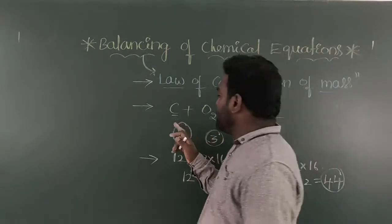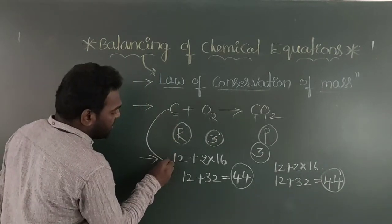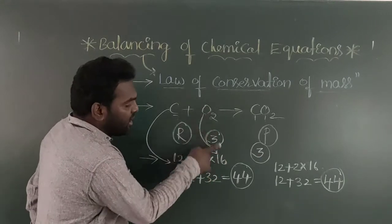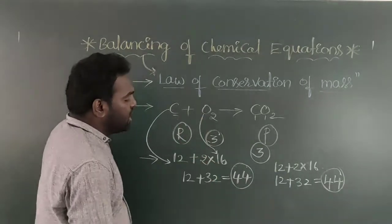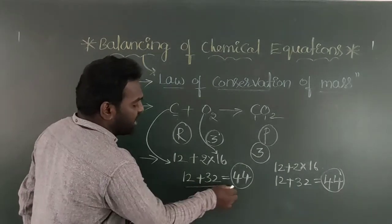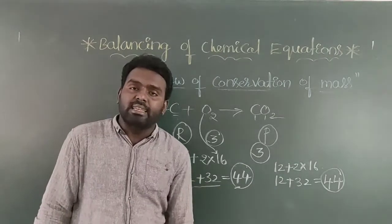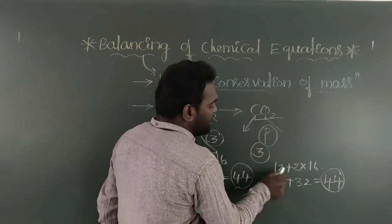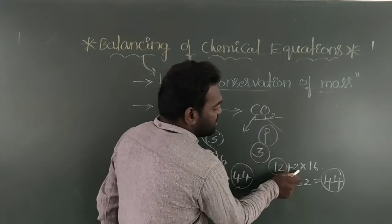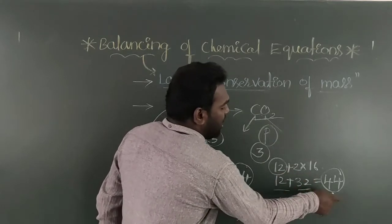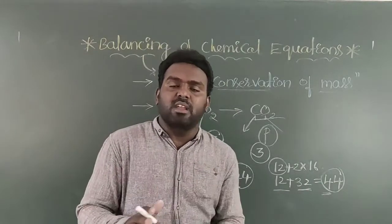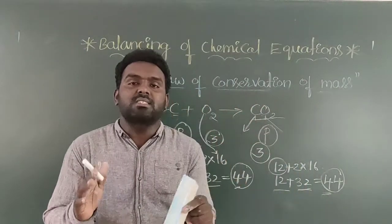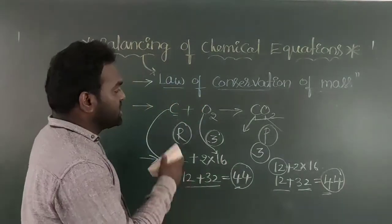By observation of this equation, the carbon atomic weight is 12 and the oxygen atomic weight is 16. With 2 oxygen atoms: 2 into 16 equals 32. Total weight of reactants is 44 grams. For carbon dioxide also: one carbon atom is 12 grams, two oxygen atoms are 2 into 16 equals 32, total is 44 grams. These three points are very important when we are balancing chemical equations — compulsorily we must focus on these three important points.